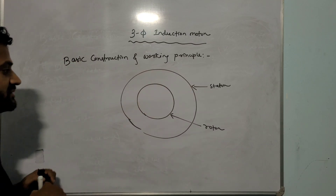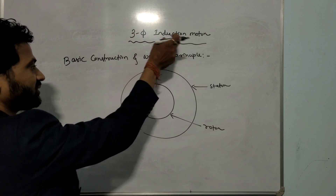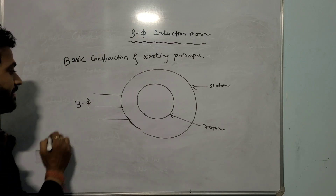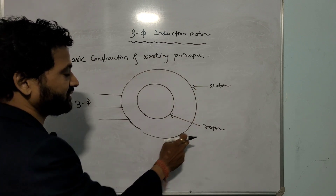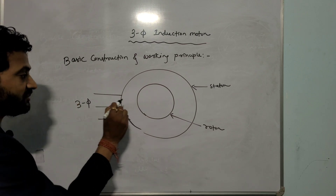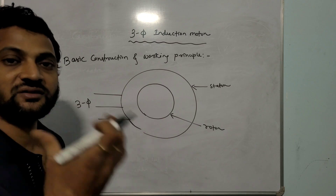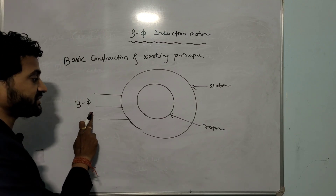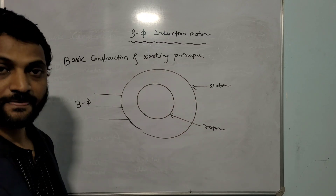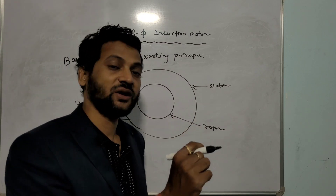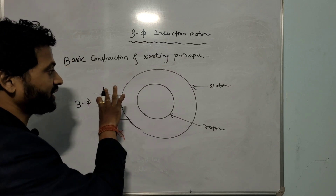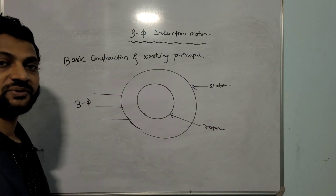The important point is how it works. The 3-phase induction motor converts 3-phase power to mechanical power. The input is given to the stator part as 3-phase supply. Whenever 3-phase supply is given to the stator winding, the stator 3-phase winding will be energized. Since 3-phase current is given to the stator winding, a 3-phase magnetic field will be developed.